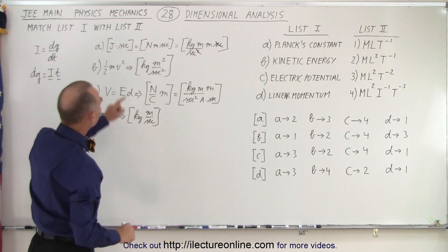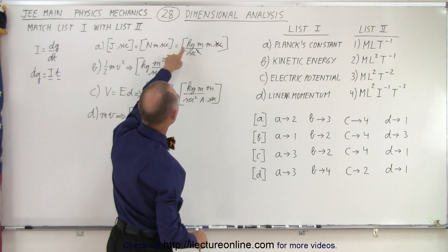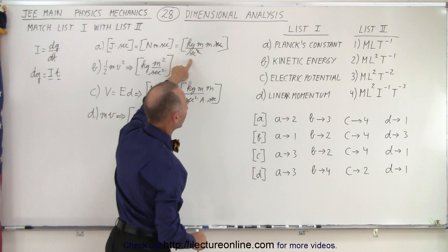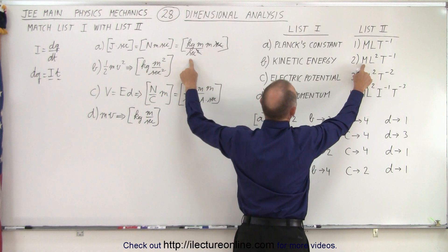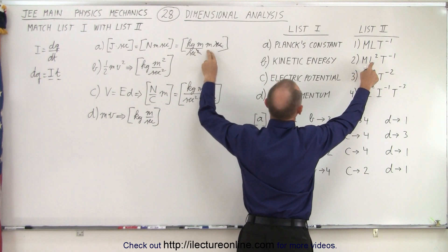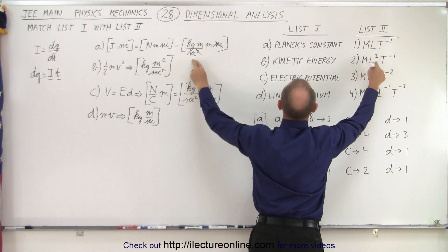So Planck's constant A is going to be kilogram meter squared per second. So kilogram is mass, meters is length squared, so a meter squared, length squared, divided by time to the singular point.